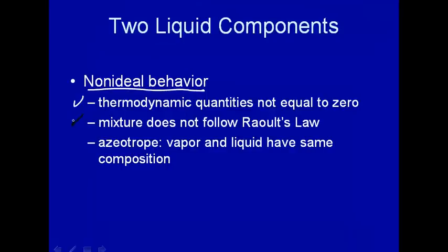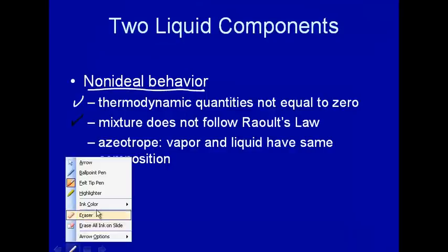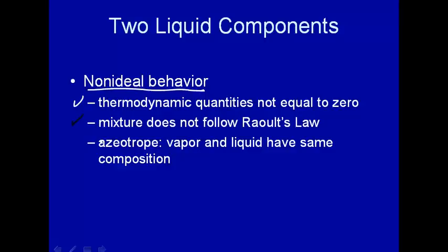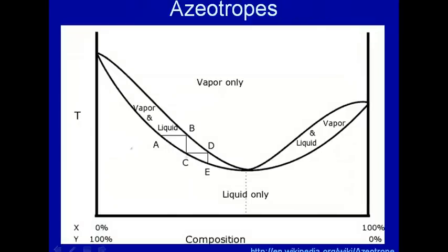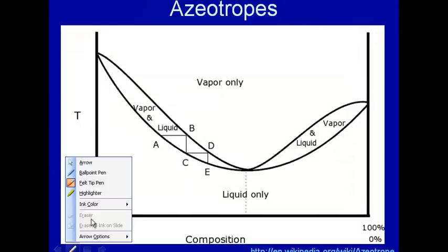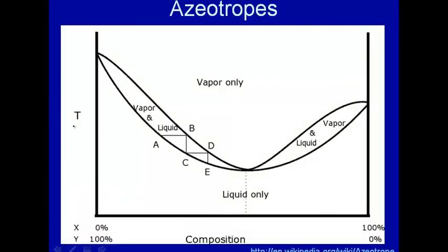And then, you have what's called an azeotrope. An azeotrope is vapor and liquid have the same composition. Actually, let's just go and take a look at what we mean by that. This is a temperature. Let me switch the ink color to black again. This is temperature versus composition. So this is a temperature composition. And remember, for those kinds of plots, up here, the upper region is where you have vapor only. The lower region is where you have liquid only.